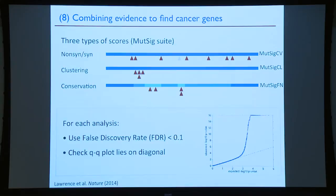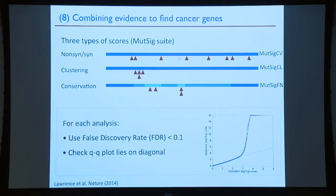There are actually three signals used to find cancer genes. First, the number of mutations. Second, whether mutations cluster — even if a gene doesn't have many mutations, if they all fall in the same protein residue, that suggests something important is happening there. Third, whether mutations fall in evolutionarily conserved sites — another signal of functional importance. We calculate a p-value from each test, combine them to a joint p-value, compute FDR, and call genes with Q < 0.1 candidate cancer genes. We check QQ plots to verify we don't have inflation — most genes follow the null and only a subset deviate.